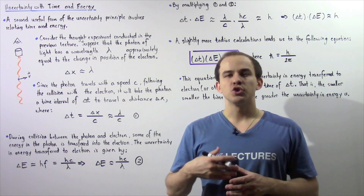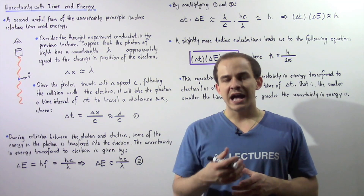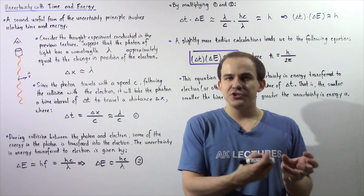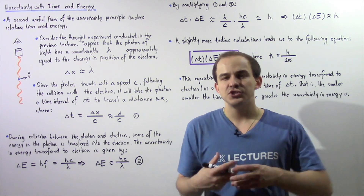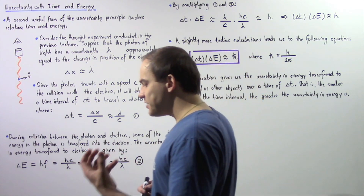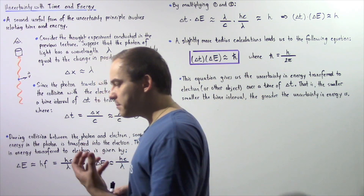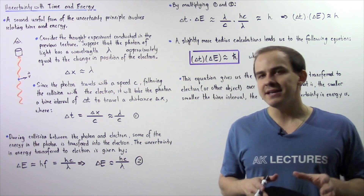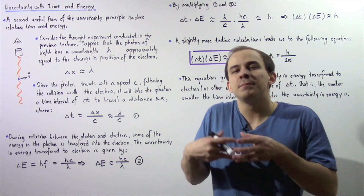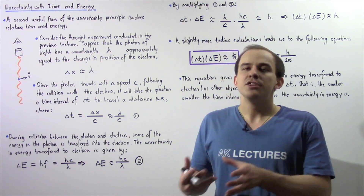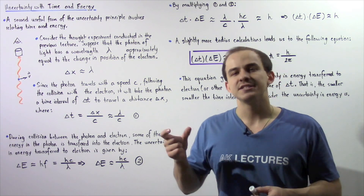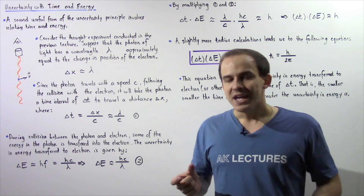In the previous lecture, we discussed Heisenberg's uncertainty principle and we said that the change in position of any object is related to the change in momentum of that same object. Basically, the less we know about the position of the object, the more we know about the momentum of that object, and vice versa.